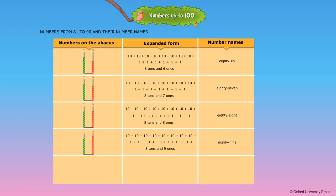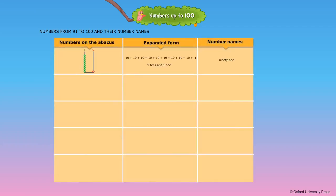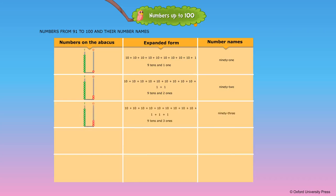9 tens — the number name is written as 90. Numbers from 91 to 100 and their number names. 9 tens and 1 one — the number name is written as 91. 9 tens and 2 ones — the number name is written as 92. 9 tens and 3 ones — the number name is written as 93.